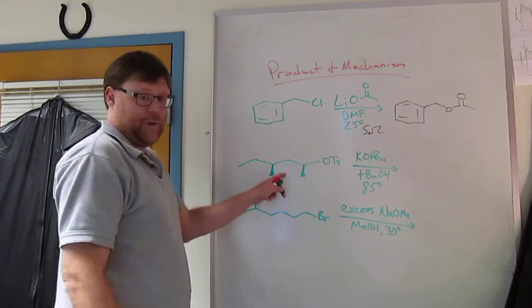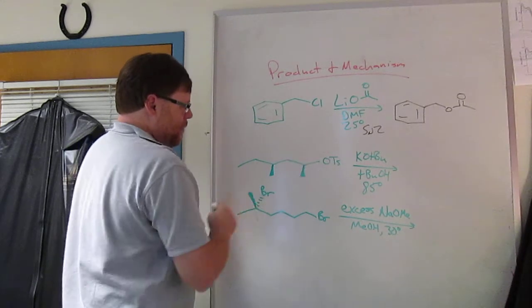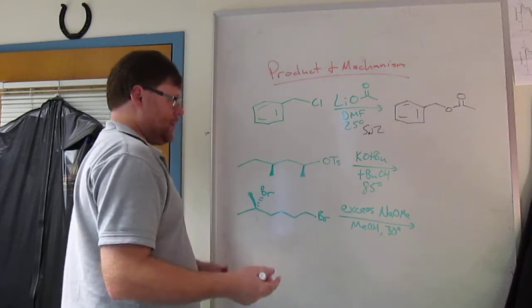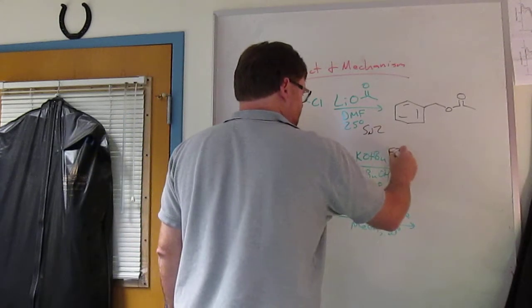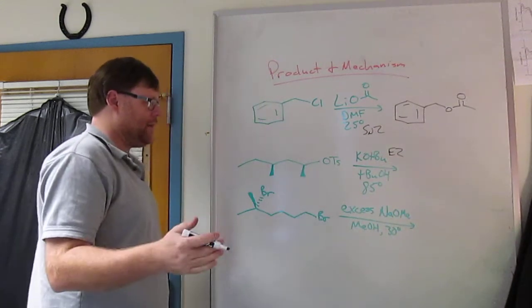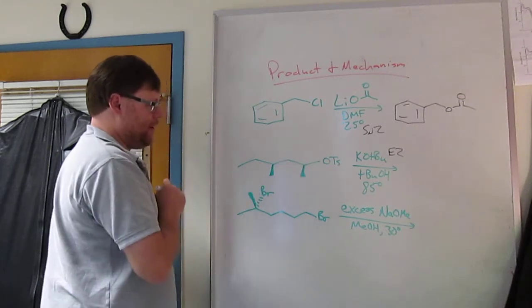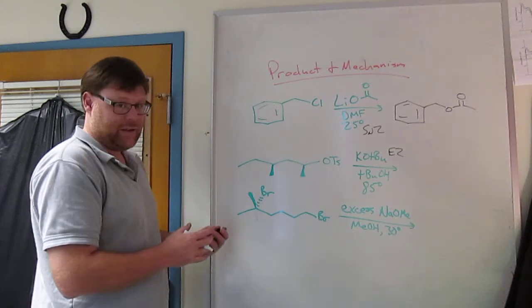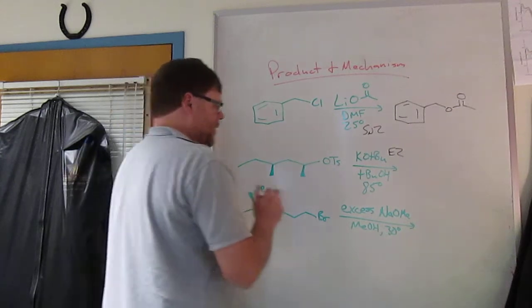Okay, next one, if you haven't worked this one already, hit pause. Okay, you're back. You have a leaving group, the tosylate. You have a strong base that's hindered. You have a high temperature. So this is going to be E2, strong base, higher temperature, strong bulky base, not a very good nucleophile, secondary carbon with a leaving group. So bulky nucleophile, relatively hindered carbon with a leaving group, going to give you elimination.